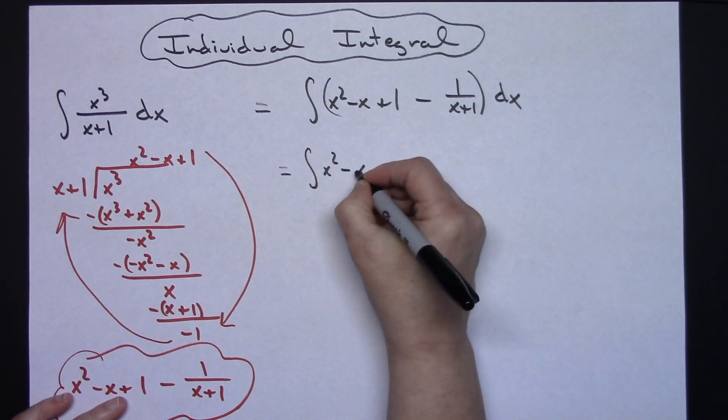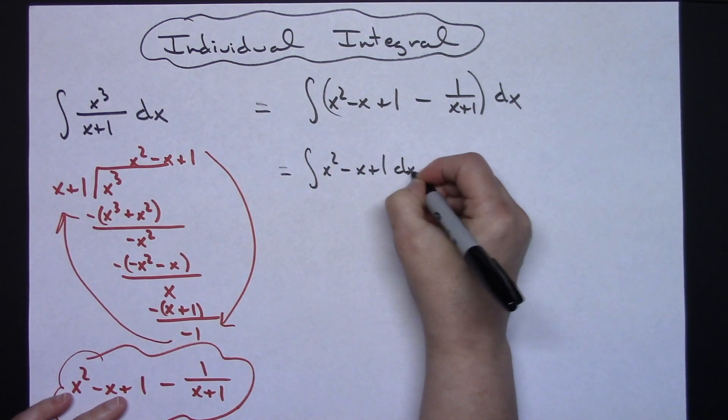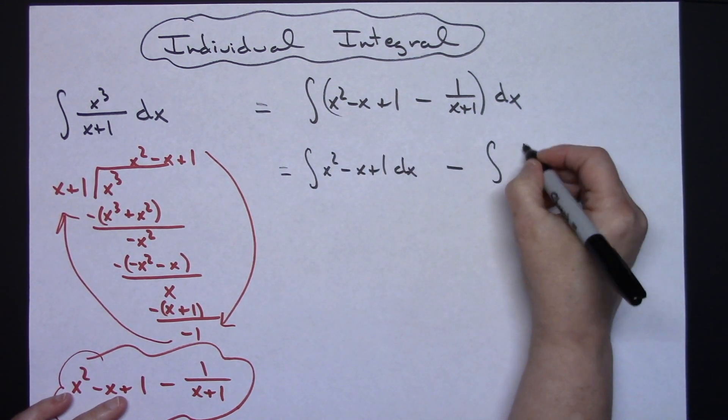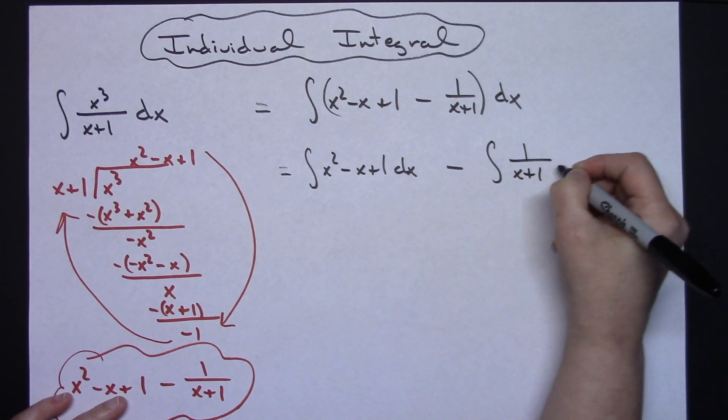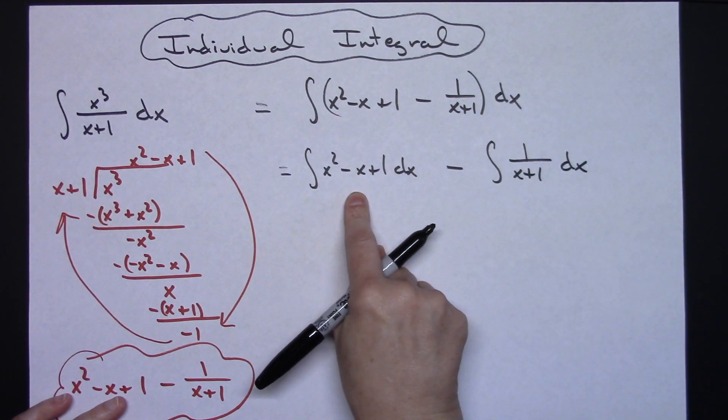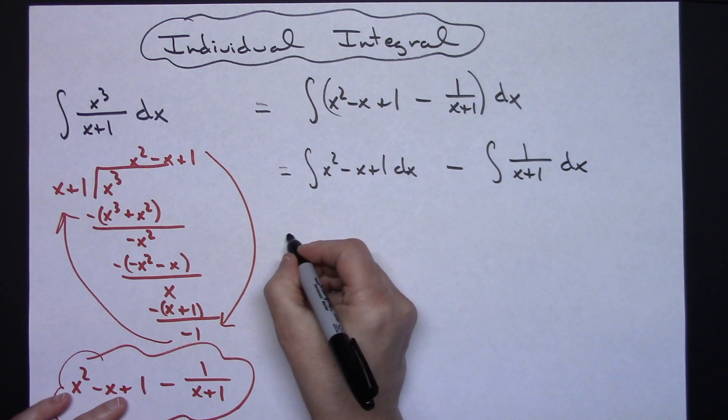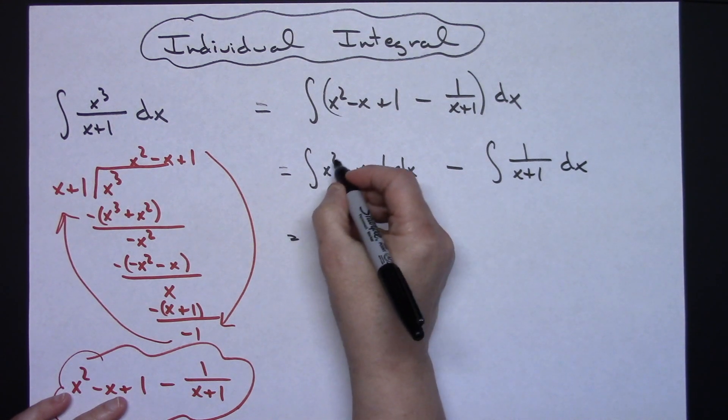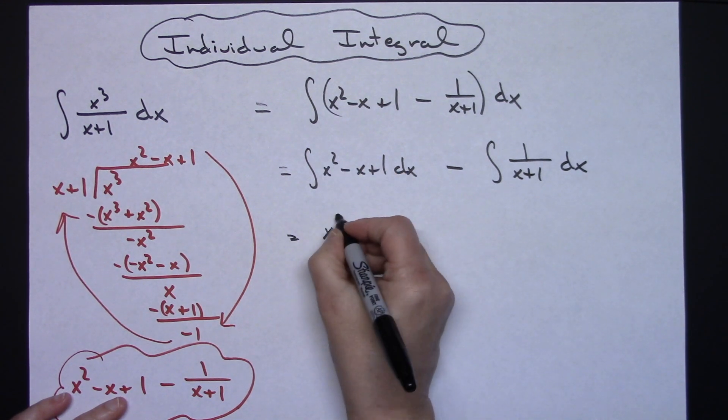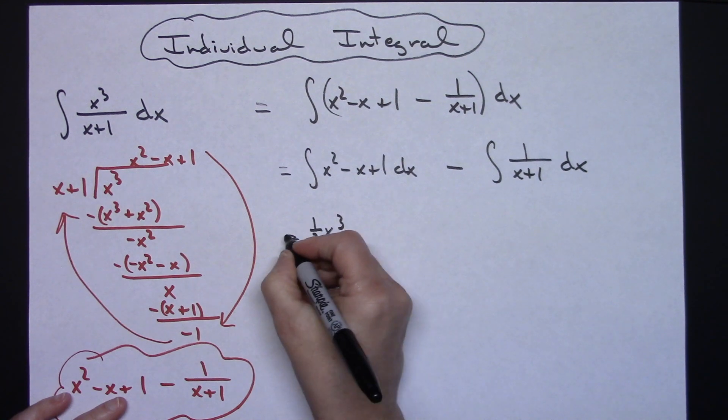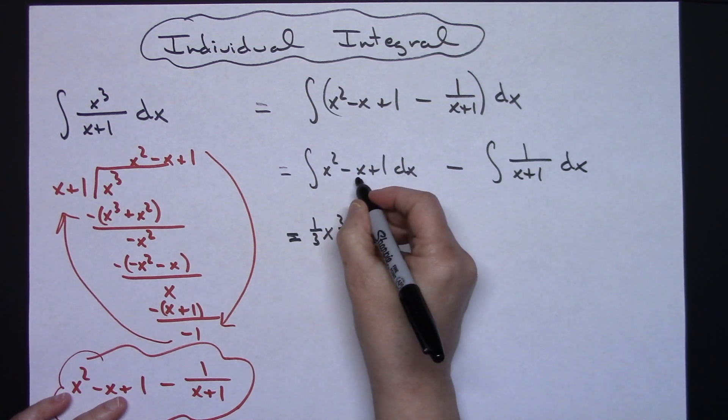I'll have the integral of X²-X+1 with dx minus the integral of 1/(X+1) dx. This is going to be a straight integration. Adding one to that exponent will give me an X³ with a one-third out in front.